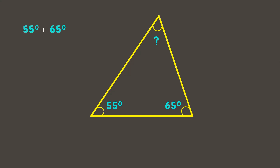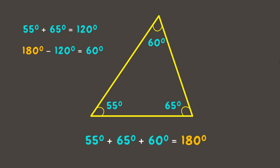So let's add 55 degrees and 65 degrees, which gives us the sum 120 degrees. Now let's subtract this from 180 degrees, which will be 60 degrees. Therefore, the measurement of this angle is 60 degrees. To check our answer, you can add up all the degrees together, and if you get 180 degrees in total, it means it's correct.